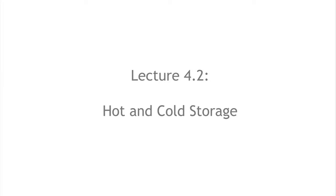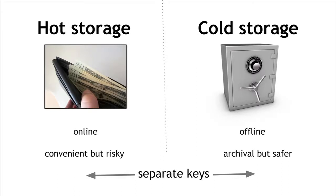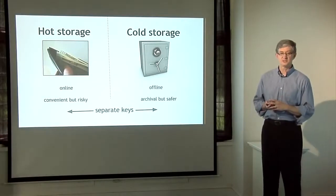In segment 4.2, we'll talk about hot storage and cold storage. Recall that in 4.1, we talked about how to store Bitcoins on your local computer — the equivalent of carrying money around in your wallet or your pocket. The idea of hot and cold storage is that you'll have some storage which is hot or online, as on your phone or in your local computer. As we covered before, storing Bitcoins that way is convenient, but also somewhat risky.